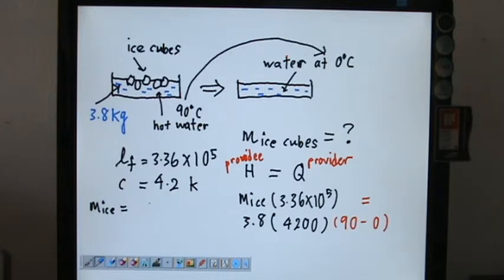So the mass of the ice is basically 3.8 times 4200 times 90 degree, and this will be divided by 3.36 times 10 power 5. So you can do some calculation with your calculator, and you find out that the value is no other than 4.35 kg.